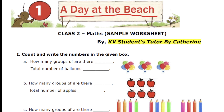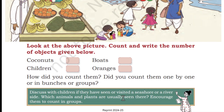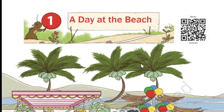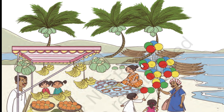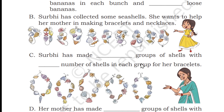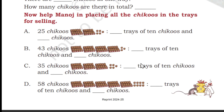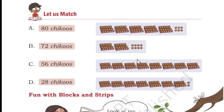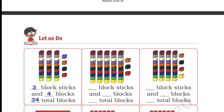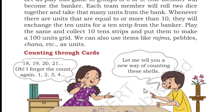Before going into the worksheet, let me show you the lesson topics we covered: look at the object, count and write the numbers. We also covered counting chikos and matching them with correct boxes, fun with blocks and strips, and we learned about boxes. Everything has been completed in the lesson videos — Parts 1 and 2.